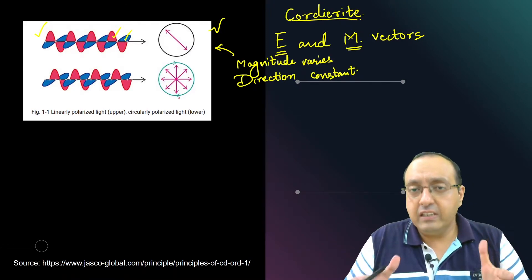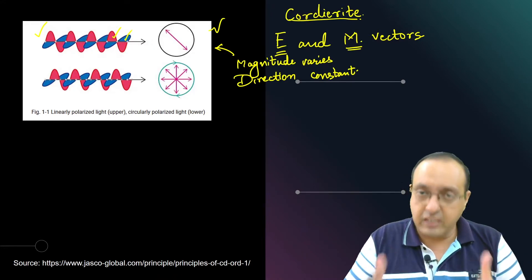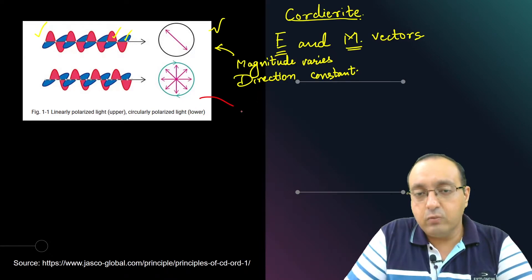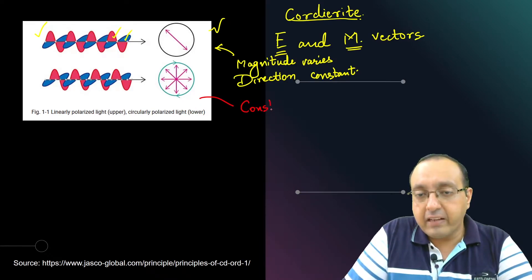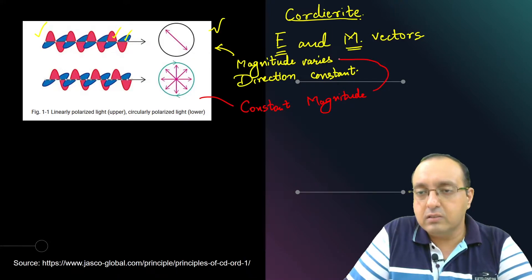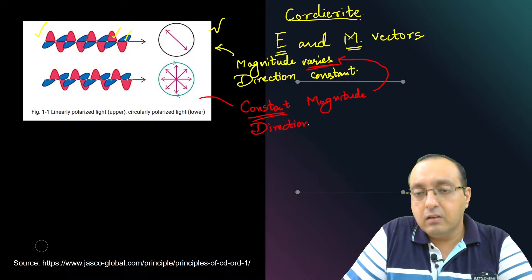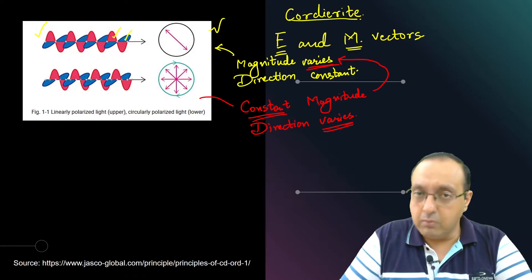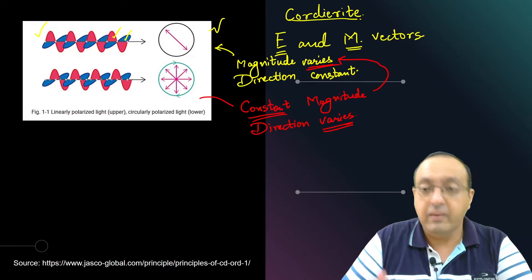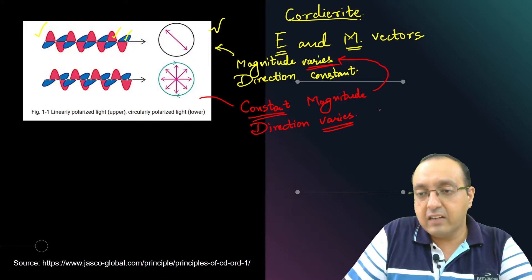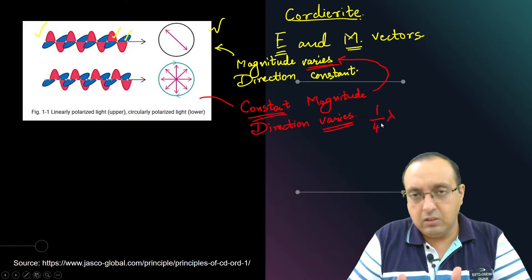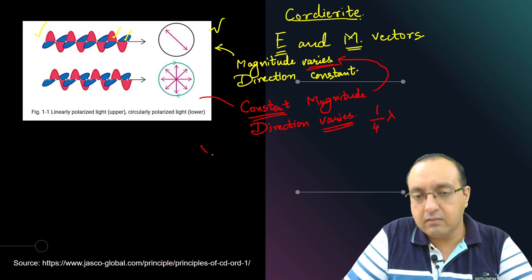In contrast to linearly polarized light, we have circularly polarized light, which is actually used for circular dichroism. In circularly polarized light, we have constant magnitude but variable direction. The two fields are one-quarter wavelength (λ/4) out of phase with each other, so they are rapidly rotating, producing an oscillating, rotating field.